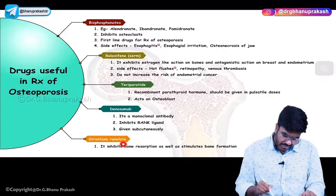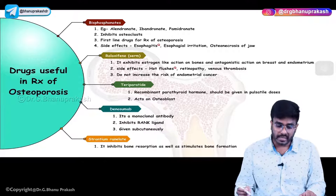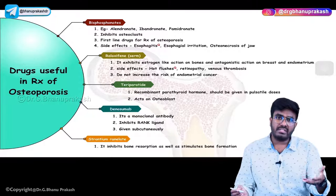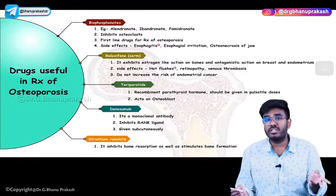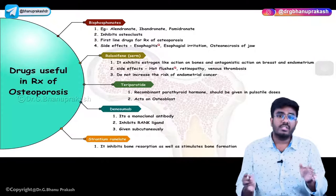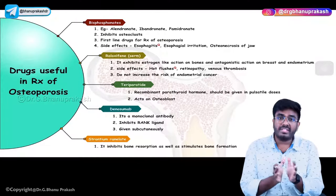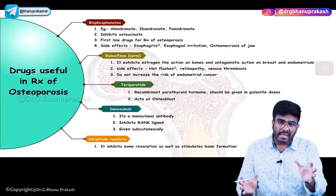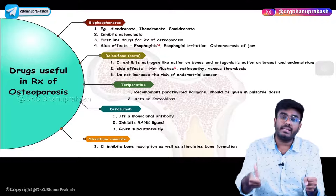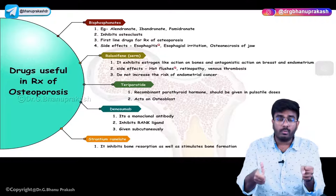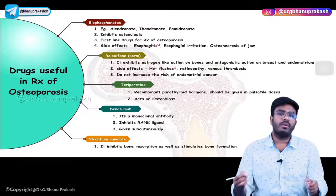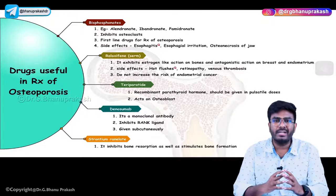The last drug is strontium ranelate, which is very important because unlike the drugs discussed so far — which either stimulated osteoblasts or inhibited osteoclasts — strontium ranelate has a dual mechanism. With one hand it inhibits osteoclasts, and with the other hand it stimulates osteoblasts, providing both beneficial functions in the treatment of osteoporosis.